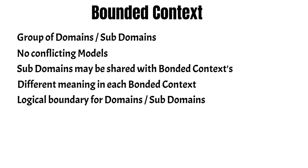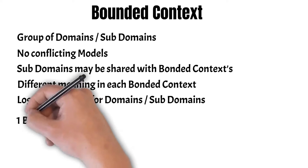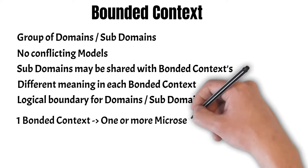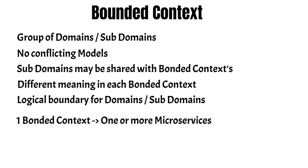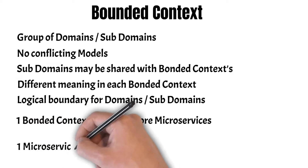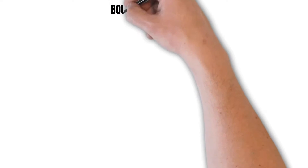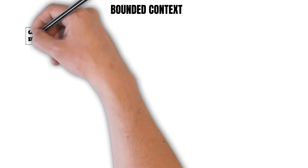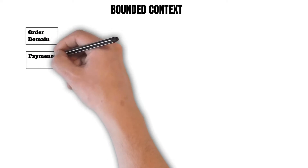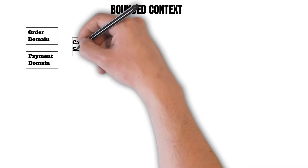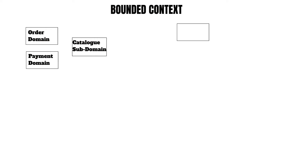A bonded context can be set as a logical boundary in which a group of domains and subdomains live. A bonded context can be modeled into one or more microservices depending upon the number of domain objects involved, but a microservice will never be coupled with more than one bonded context. For example, we have identified the following domains and subdomains: the order domain, the payment domain, the catalog subdomain, and the inventory domain.